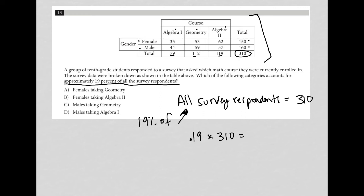So what is that value? You can take this to your calculator, just type in 0.19 times 310. And what we get is 58.9. All right, so that's my 19% of all survey respondents.